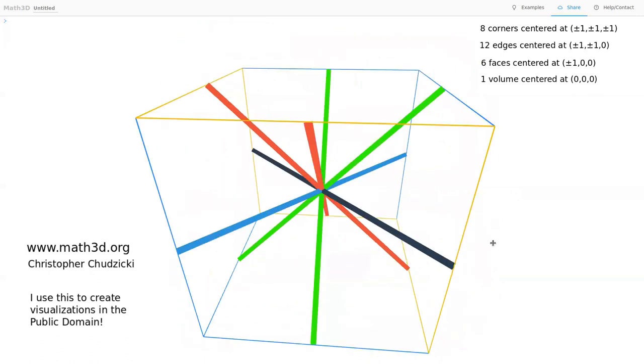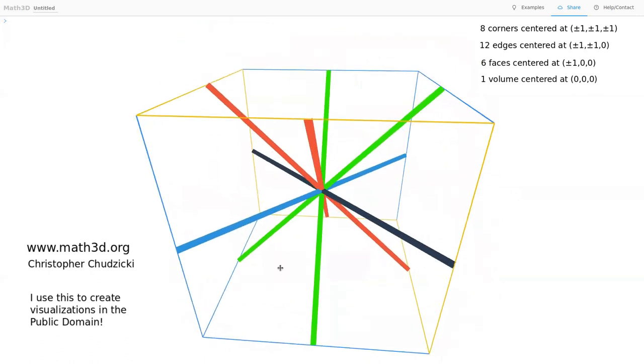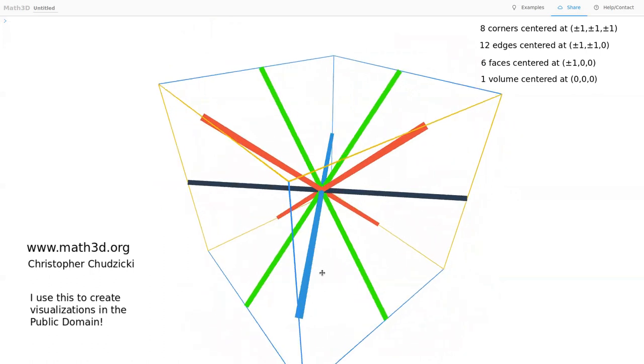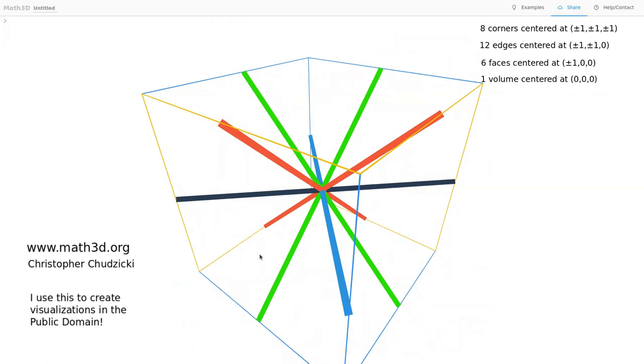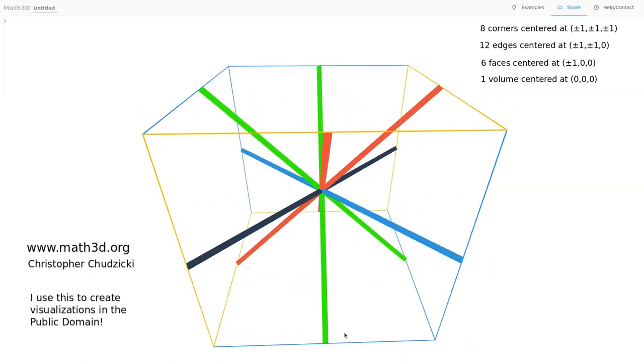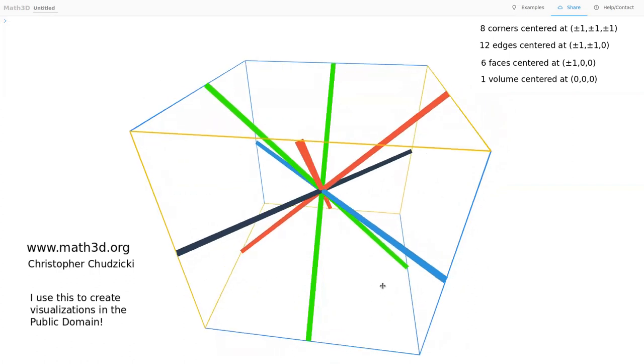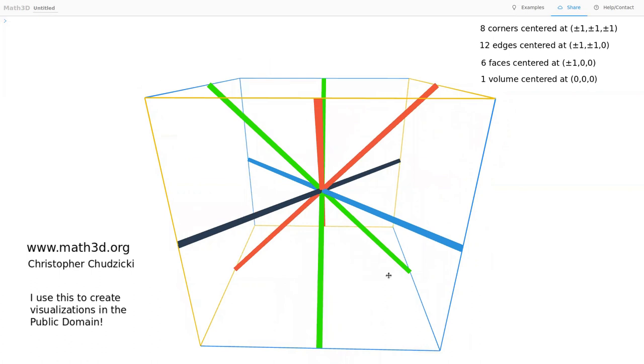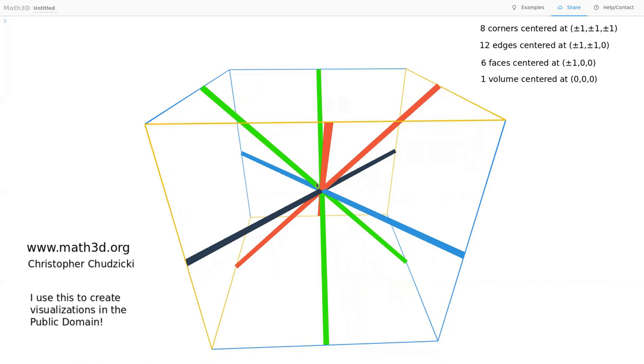So I'm very grateful to the creator for that at math3d.org. And I want to show, first of all, this is the root system A3 placed within a cube. So just to review, a cube has eight corners. There's four on top and four on bottom. And it has 12 edges. So there's four edges around on top, four edges around on bottom, and then four going up and down. And it has six faces. There's one on top, one on the bottom and four going around.